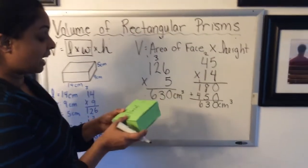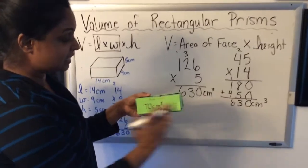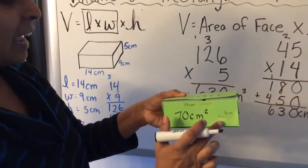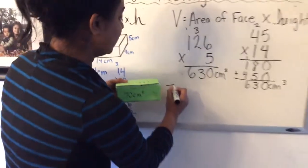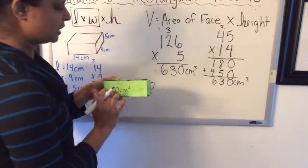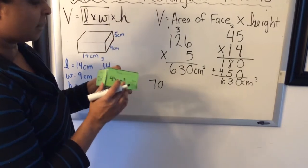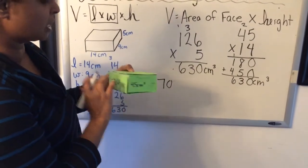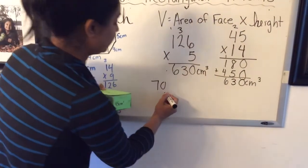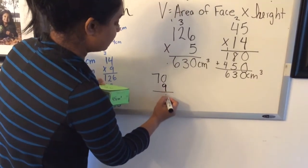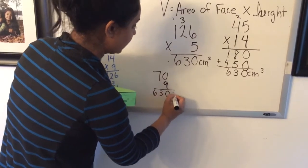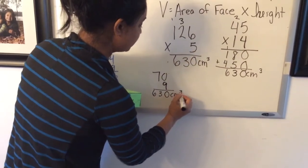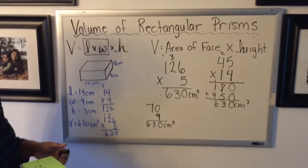And then I could even give you the measurement of this face here. So now I've used the length and the height together and I'm going to give you that area of 70 to use. And that means that I'm now going to be using the missing measurement here, which would be the width, which is 9. 0 times 9 is 0 and 7 times 9 is 63, and again I'm getting that volume of 630 centimeters cubed.